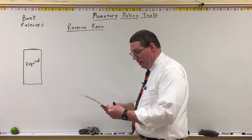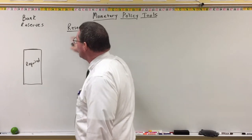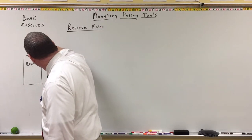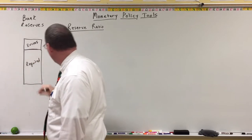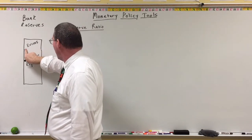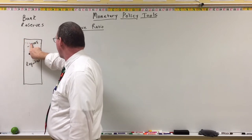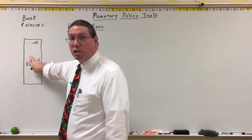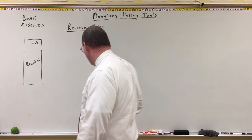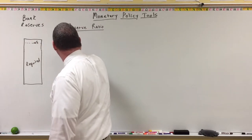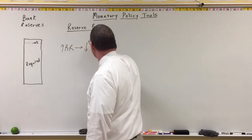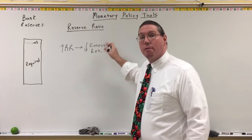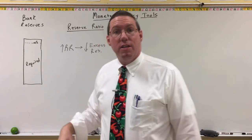The second thing that happens when the Fed changes the reserve ratio is that it changes how much reserves banks are required to have. If a bank has some excess reserves and the Fed increases the reserve ratio, the required reserve amount goes up, so now they have less excess reserves. This does not change the total bank reserves — it just changes how much banks are required to keep. An increase in the reserve ratio leads to a decrease in excess reserves, meaning banks have less money to loan out, which decreases money creation and the money supply.